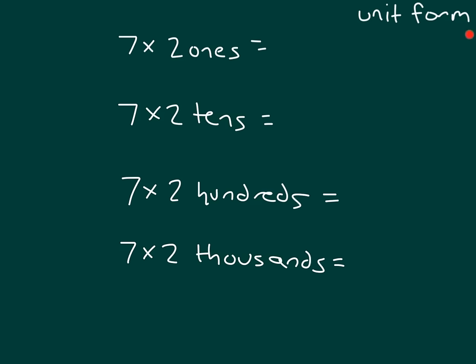What do you notice about each of these problems that's set up here? We're working in unit form. Did you state that 7 is a factor in each of the problems? The other thing that you might have noticed is that the units are in order, where we have ones, then tens, then hundreds, then thousands.